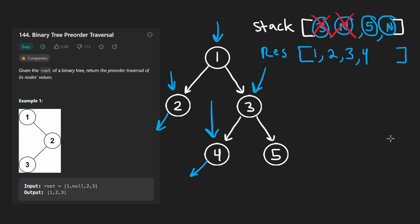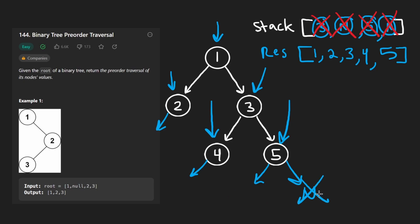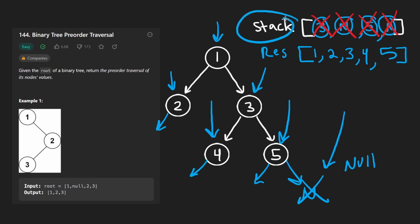Now our current pointer is at null, so we pop from the stack — popping null. Our pointer is at null again, so we pop once more — popping five. Our current pointer is at five, so we add five to the result. We try to go left, adding null to the stack, move to null, and end up popping that null from the stack. At this point, our current pointer is null and our stack is empty. If we try to pop from the stack we can't — that's the signal that we're done: when our current pointer is null and the stack is empty.